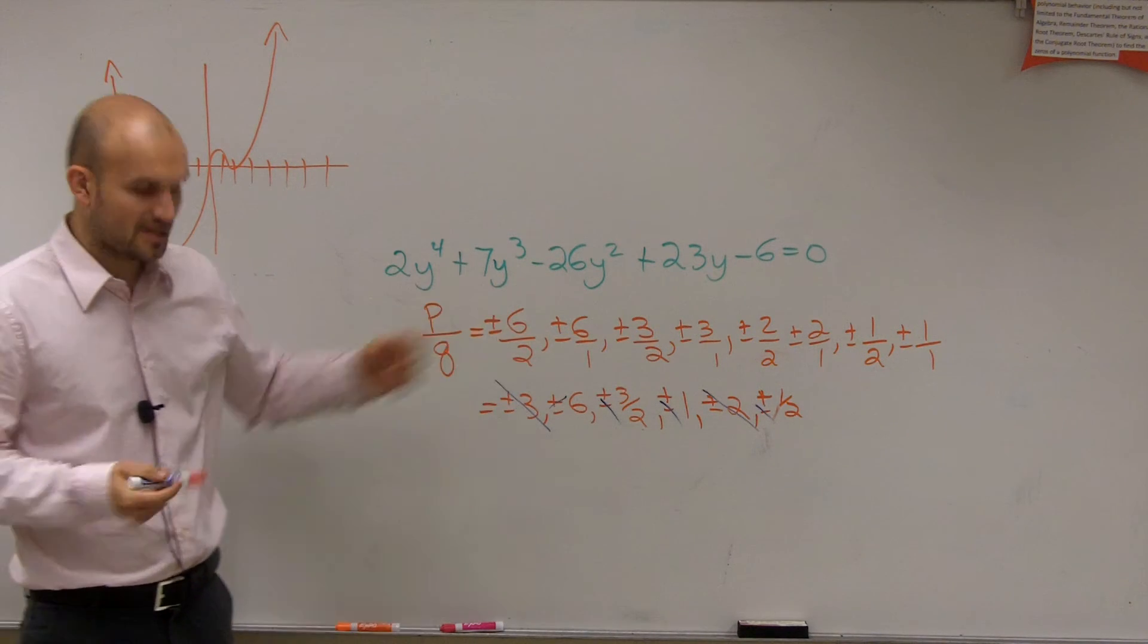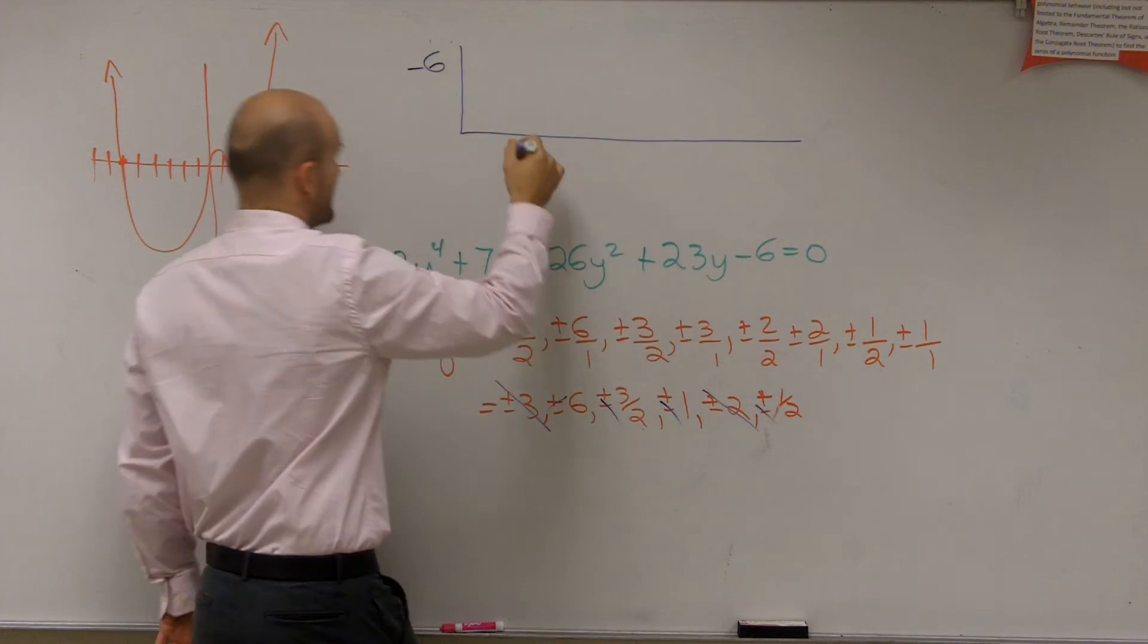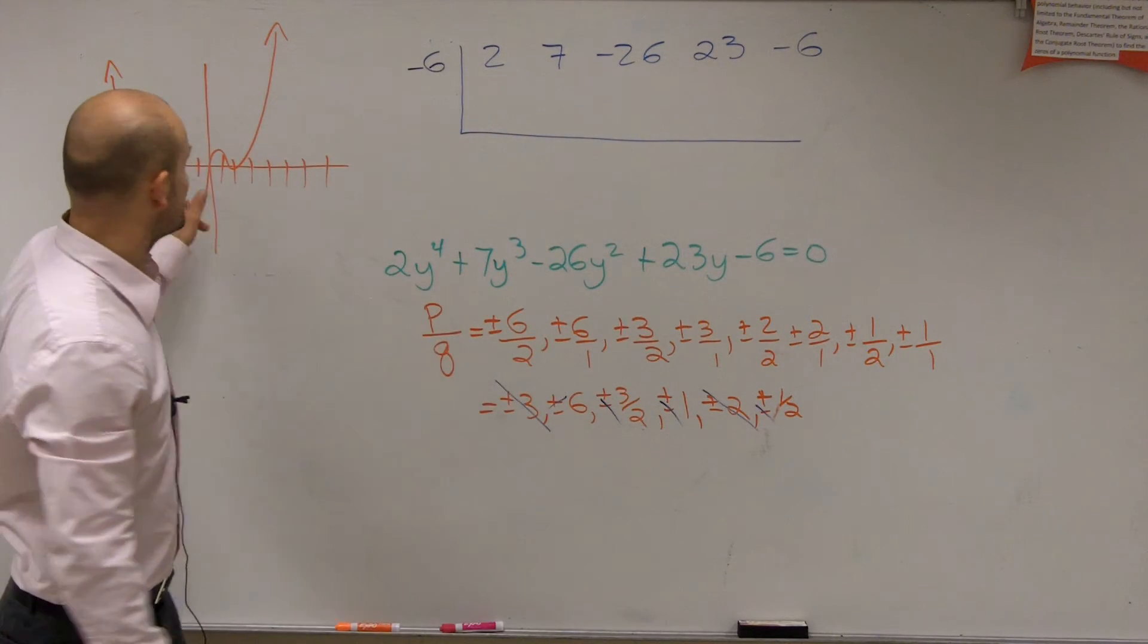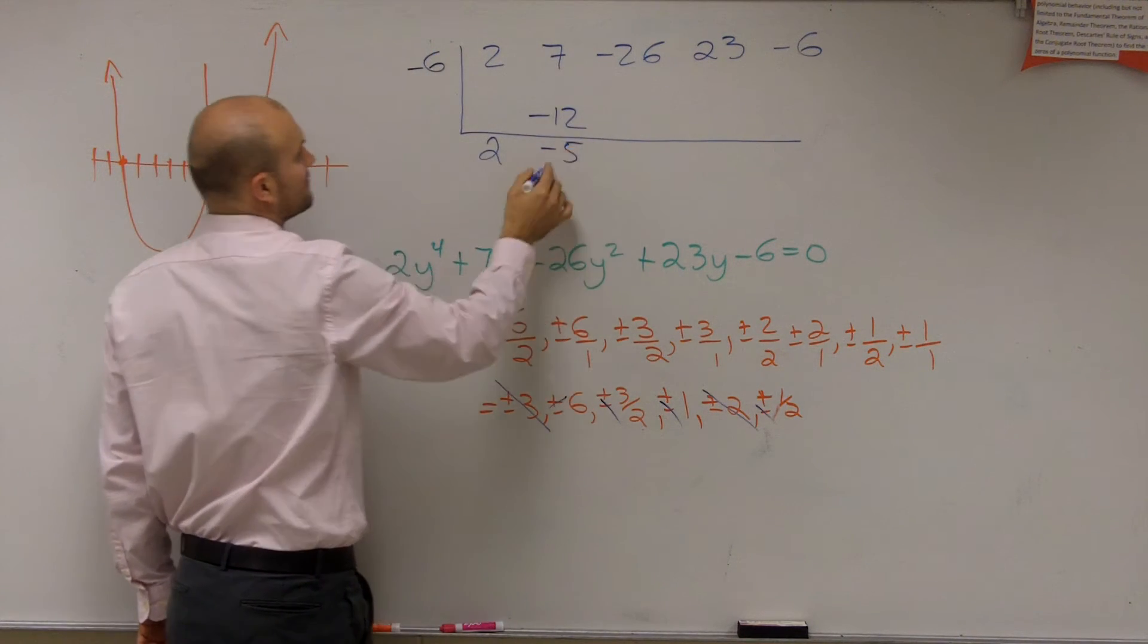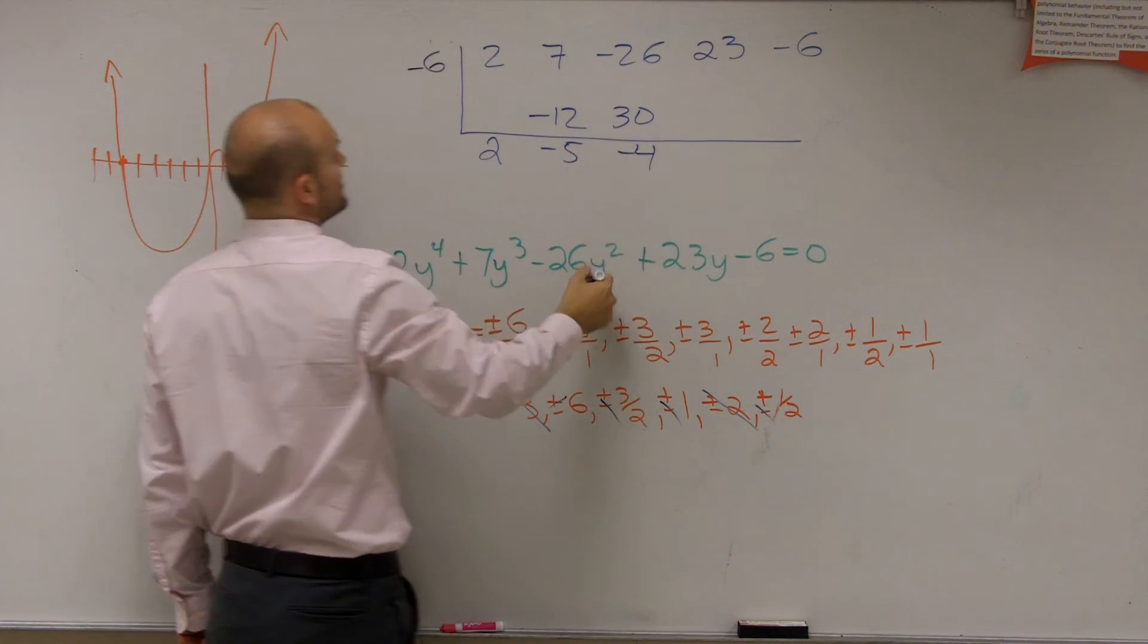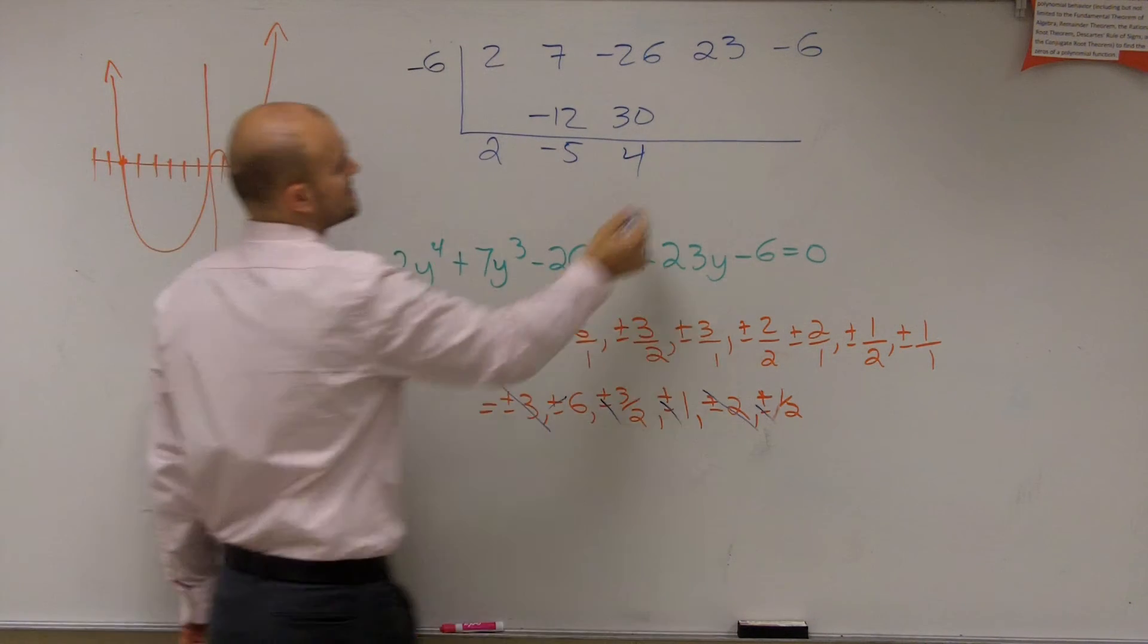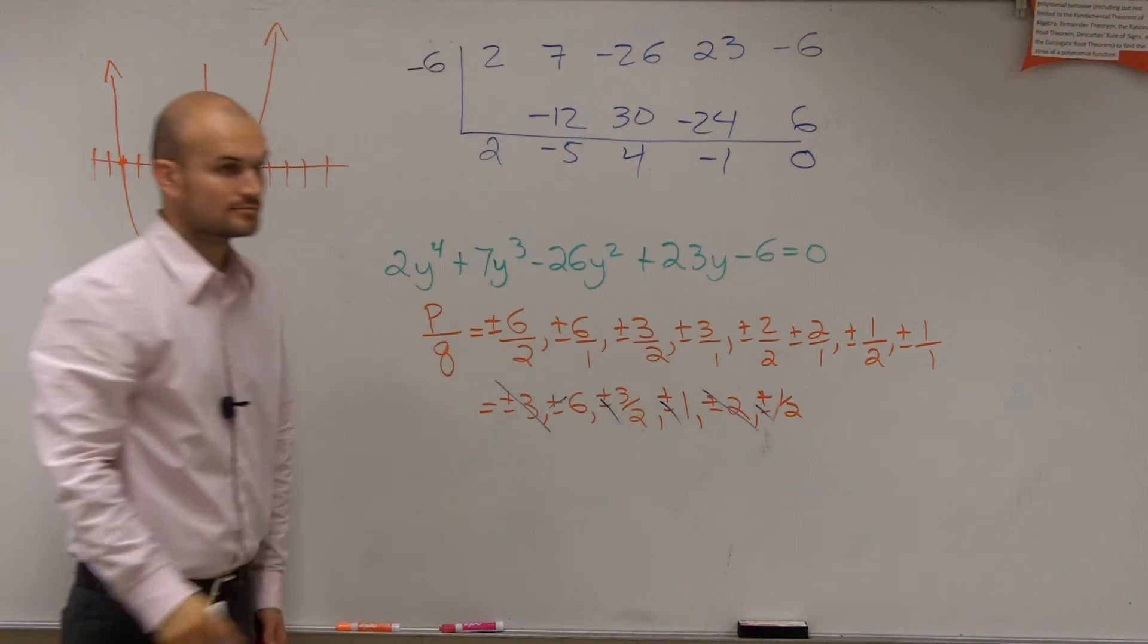So what we're going to do to verify our solution is let's do synthetic division with negative 6. So I do 2, 7, negative 26, positive 23, negative 6. So let's test if negative 6 is a solution. Bring down the 2. 2 times negative 6 is negative 12. When you add 7 plus negative 12 is negative 5. Negative 5 times negative 6 is a positive 30. Add them up, negative 4. Negative 4 times negative 6 is positive 24. Slow down. 4 times negative 6 is going to be negative 24, negative 1, positive 6, 0.